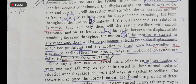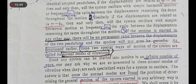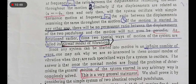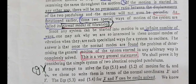اگر motion اس طرح specified نہ ہو تو displacement کی کوئی permanent ratio نہیں ہوگی اور motion of two pendulums will not even be periodic۔ As mentioned earlier, these two special ways of motion of the system are called its normal modes of vibration۔ اس طرح ہم نے 3-4 definitions کر لیں: normal coordinates، normal modes، shape of configuration، دو cases جو shape اور normal modes of vibration کو differentiate کرتے ہیں۔